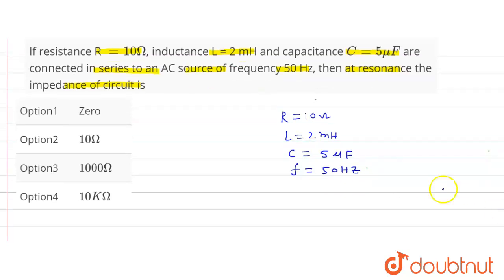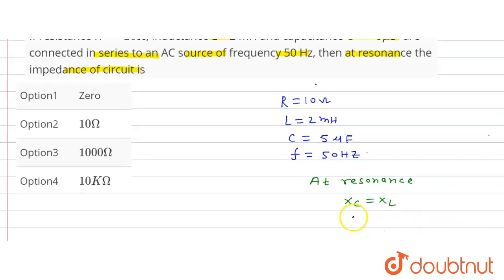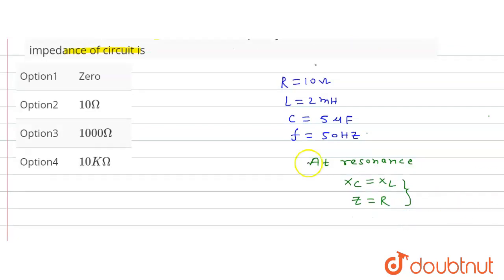We have to find the impedance at resonance. We know at resonance, capacitive reactance equals inductive reactance, and impedance Z equals R. This is the condition of resonance.